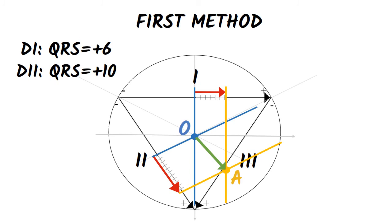By uniting points O and A we get the vector of the electrical axis of the heart. By measuring the angle formed by the axis that divides the circle in superior and inferior half and by the OA vector, we obtain the value of the electrical heart axis — in our case, plus 45 degrees, so a normal heart axis.